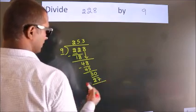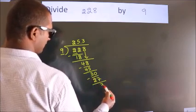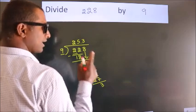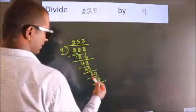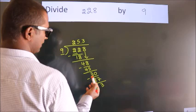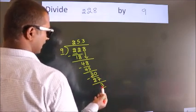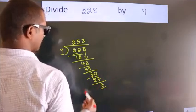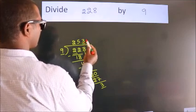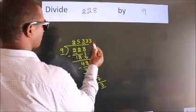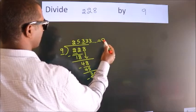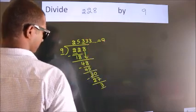Now we subtract. We get 3. Now you observe. Here we had 3, and we got 3 again. That means this number keeps on repeating. So this is our quotient.